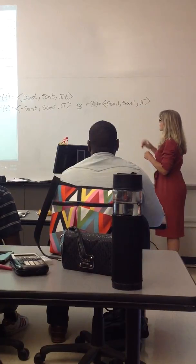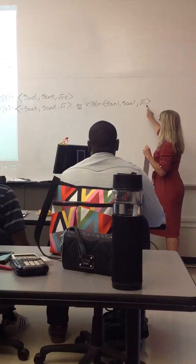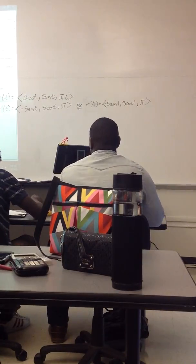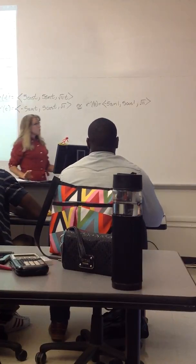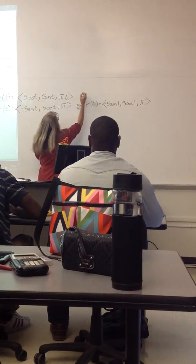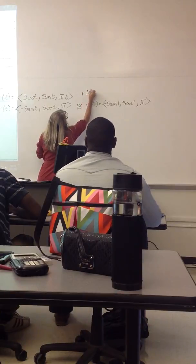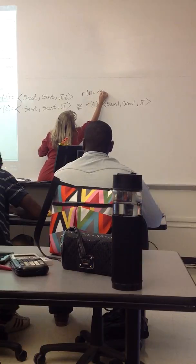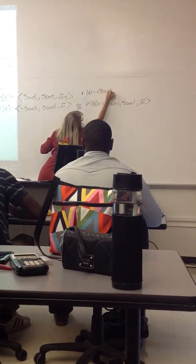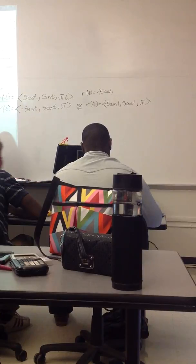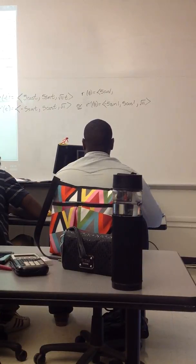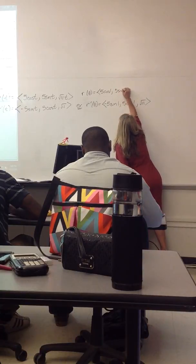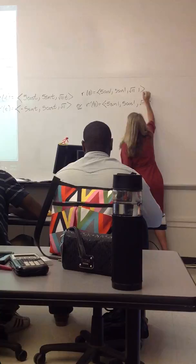Okay, so at t equals 1, the tangent vector is given by this. You're going to start that tangent vector, though, from the point r of 1. So r of 1 is 5 cosine of 1, 5 sine of 1, square root of 11 times 1.